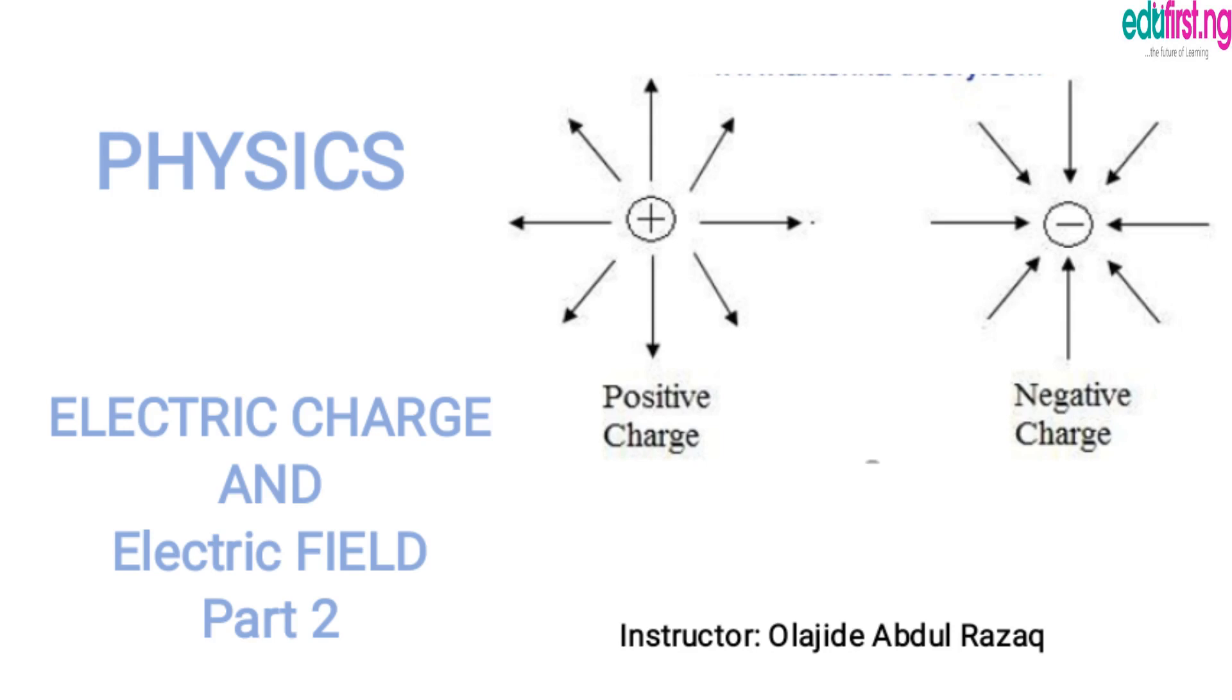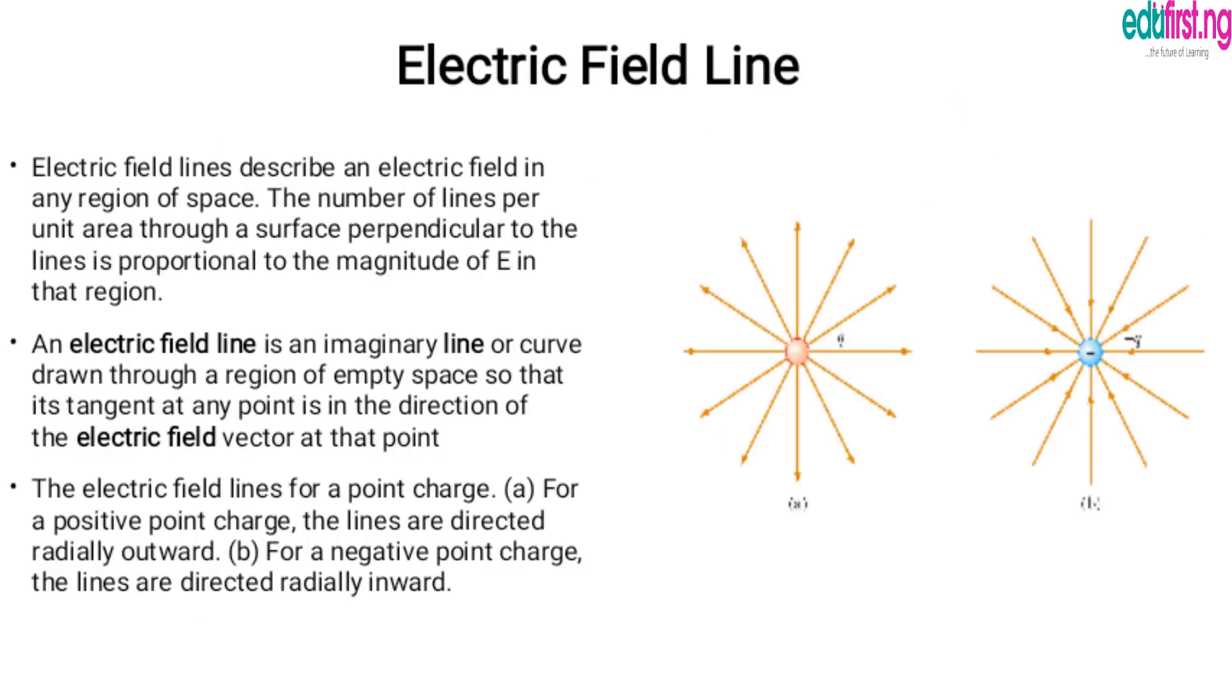Hello everyone, welcome back. This is Electric Charge and Electric Field Part 2. In our previous class, I explained what an electric charge means, the simple experiments to demonstrate electric charge, and the features of electrons, conductors, and insulators. I explained that opposite charges attract one another because of the electric force, and this phenomenon is outlined in Coulomb's law.